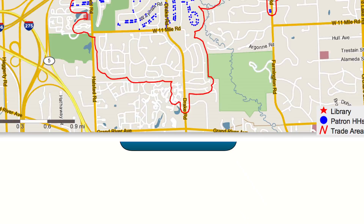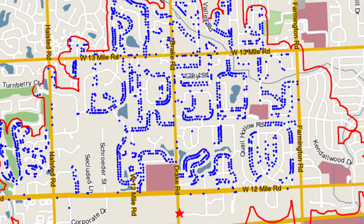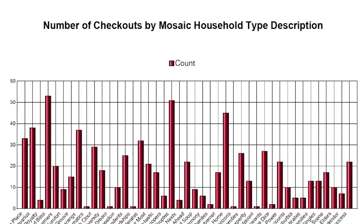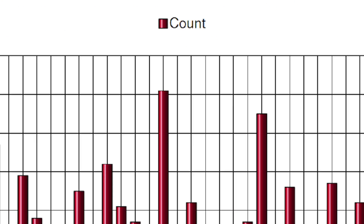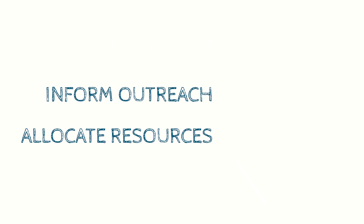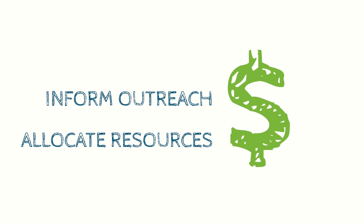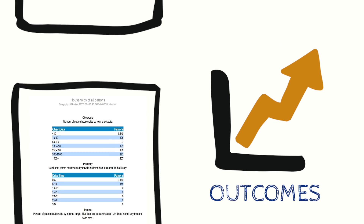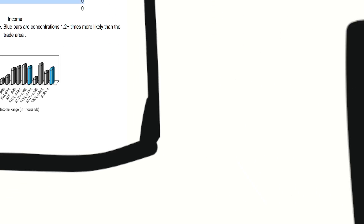You will see who is and isn't using your library, and how, so you can better inform outreach and allocate resources. By repeatedly running reports, you can measure impacts over time.